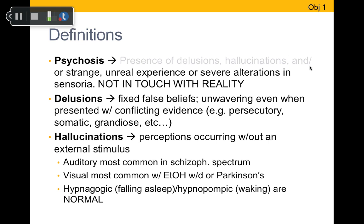Delusions are simply defined as fixed false beliefs. They are unwavering — they will not change even when the person is presented with evidence to the contrary. Types include persecutory delusions, where people fear something terrible will happen to them; somatic delusions, like feeling bugs crawling inside their stomach; and grandiose delusions, where someone believes they're the president. The most important thing to remember is that delusions really cannot change when confronted with contrary evidence.